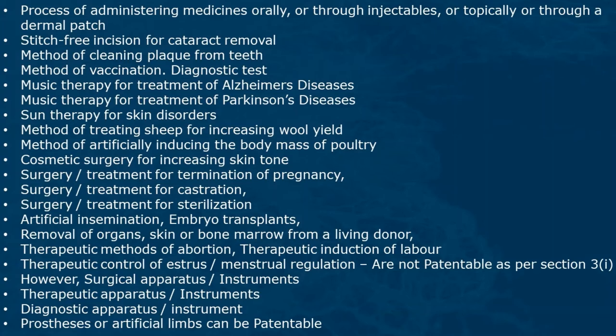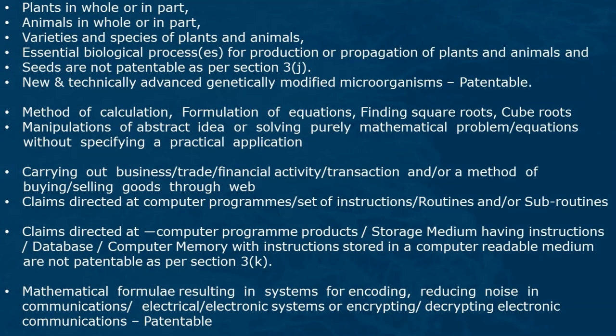However, surgical apparatus and instruments, therapeutic apparatus and instruments, diagnostic apparatus and instruments, prostheses, and artificial limbs can be patentable. Plants in whole or in part, animals in whole or in part, varieties and species of plants and animals, essential biological processes for production or propagation of plants and animals, and seeds are not patentable as per section 3j.